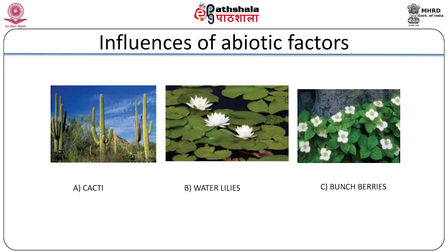To summarize this module, abiotic factors like light, temperature, water, precipitation, elements, and minerals are important abiotic factors and it is very important to study them in order to understand the structure and functionality of an ecosystem. Thank you.